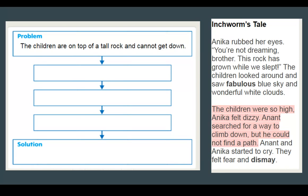We're going to use Inchworm's Tail as an example. We can find our problem highlighted in red here. It says, 'The children were so high Anika felt dizzy. Anant searched for a way to climb down but he could not find a path.' So the problem is: the children are on top of a tall rock and cannot get down.